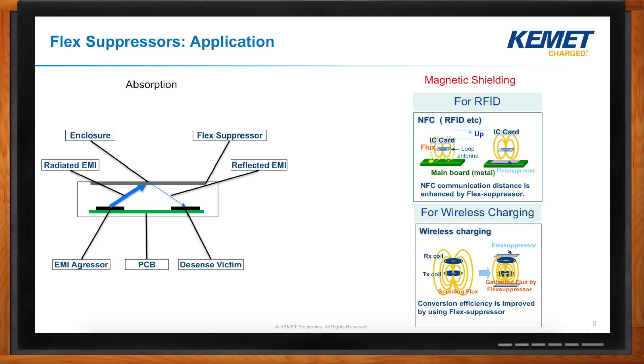Another thing that you can do with the flex suppressor material is in the application of wireless charging or NFC. In both of those cases, you have transmit and receive coils that radiate out in all directions. But if you place the flex suppressor material behind those transmit and receive coils, then you can gather up some of that extra unused flux and that will have an impact on your efficiency in that it'll improve the efficiency because you're gathering up and using more of that available flux. You mentioned current sensors. Can you tell me some about those?